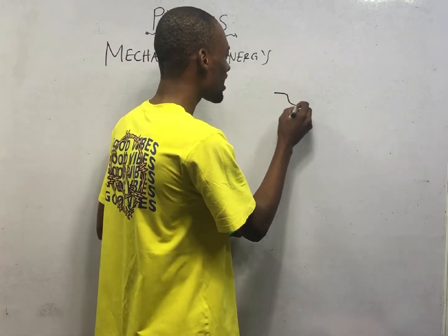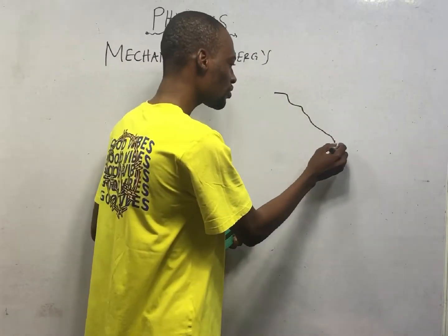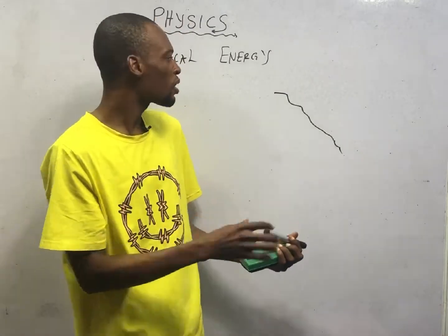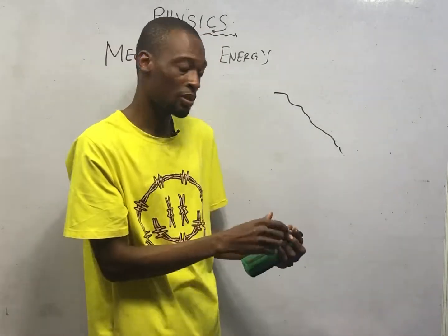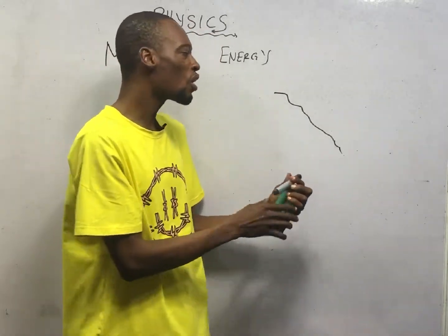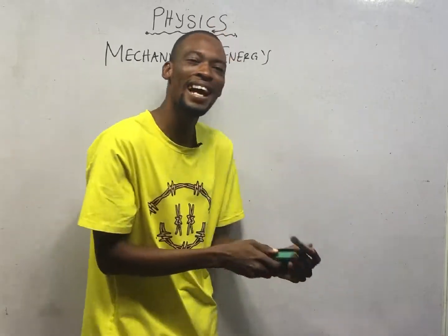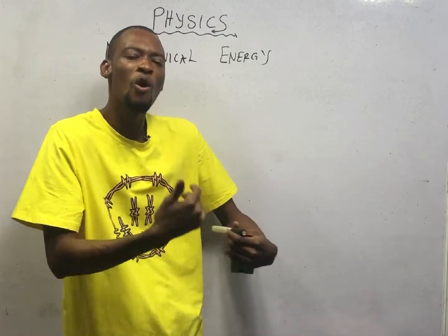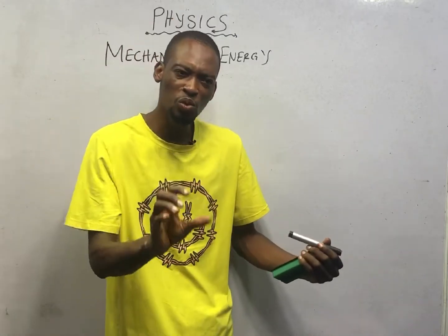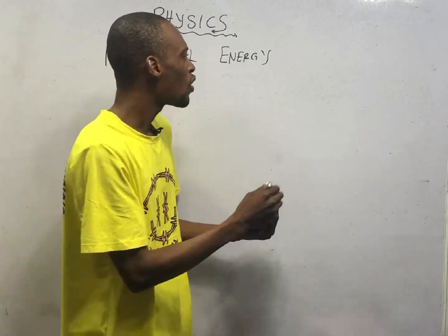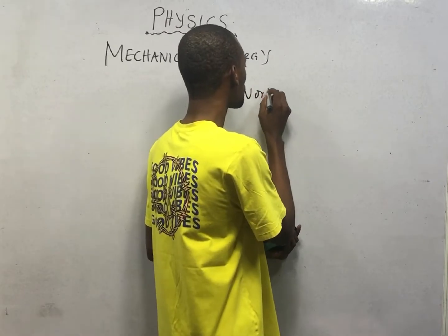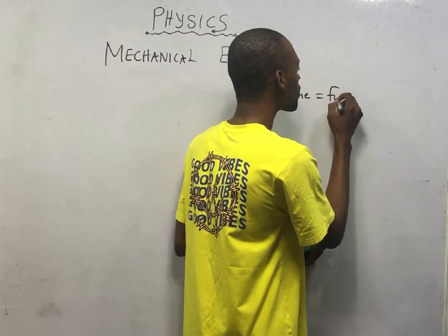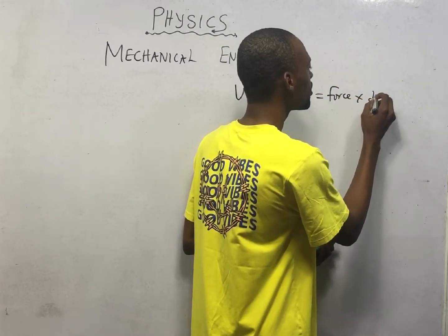If this is a staircase in your house, as you climb the staircase, energy is being used, because you need energy to climb. To climb trees, to work — all these things require energy. Therefore, energy is the ability or capacity to do work. And what is work?